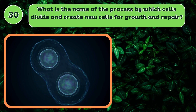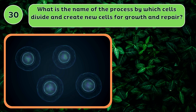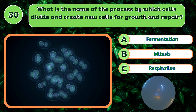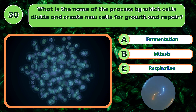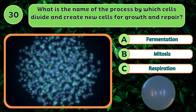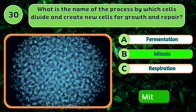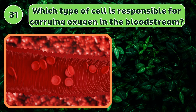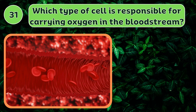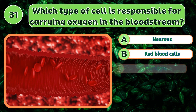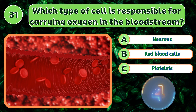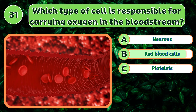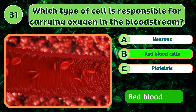What is the name of the process by which cells divide and create new cells for growth and repair? Mitosis. Which type of cell is responsible for carrying oxygen in the bloodstream? Red blood cells.